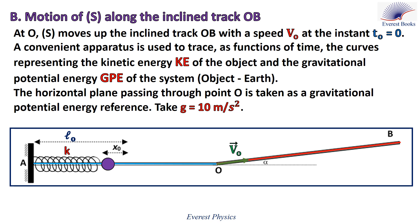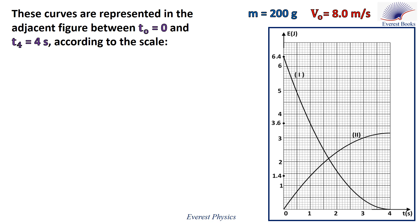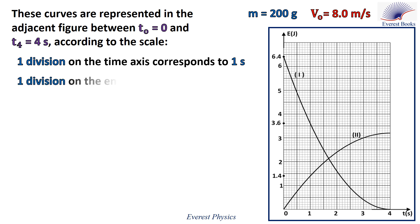Part B: at O, the object moves up the inclined track OB with speed v0 at time t0 equals zero. An apparatus traces as functions of time the kinetic energy of the object and the gravitational potential energy of the system object-Earth. The horizontal plane through point O is taken as the GPE reference, and g equals 10 meters per second squared. The curves are shown in the adjacent figure between time zero and four seconds. One division on the time axis equals one second; one division on the energy axis equals one joule.